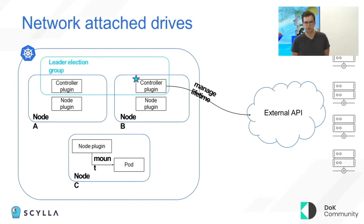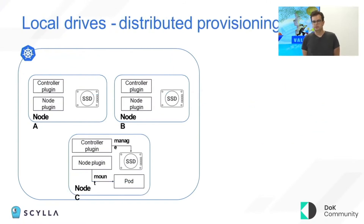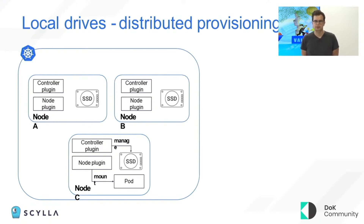Writing drivers for network attached drives is different from writing them for local drives. For network attached drives, you usually run a couple of controllers using leader election to manage the lifetime of drives via some external API, and when the pod lands on the node, it can access the drive via network and mount it. But for local drives, since they are only local to a particular node, a driver running on node A cannot create a directory on the disk attached to node B. So you need distributed provisioning, and your driver must not react to requests not bound to the node it is running on.